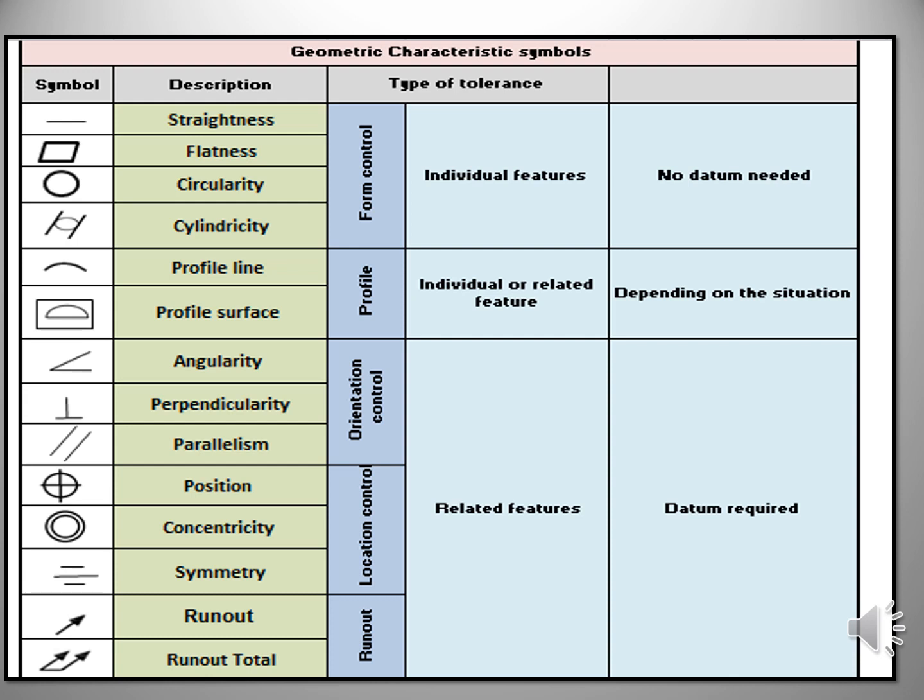Datum is required. And fourth classification is location control. Position, concentricity and symmetry comes under location control. This is also a related feature. Why? Because datum is required. And fifth classification is runout. Runout and total runouts comes under runout classification. And these also are related features. Datum is necessary.